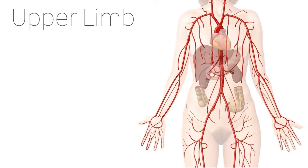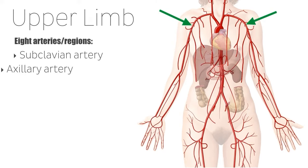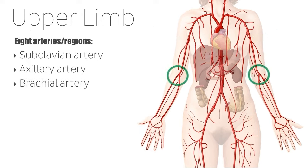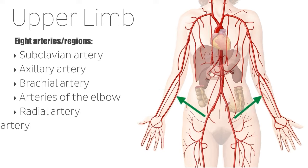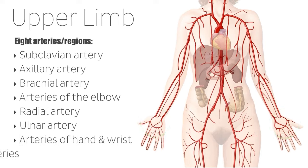As we can see in this image of the upper body, the arteries in the upper limb all originate from the aortic arch. These eight arteries and arterial regions, which branch from the shoulder to the fingers, are the subclavian artery, the axillary artery, the brachial artery, the arteries of the elbow, the radial artery, the ulnar artery, the arteries of the hand and wrist, and the scapular arteries, which are found on the posterior aspect of the upper torso.